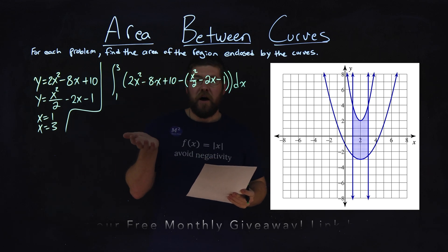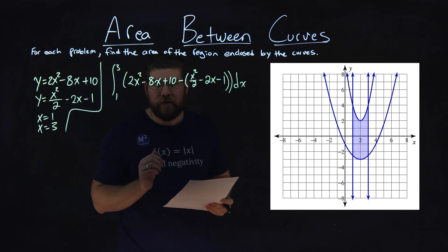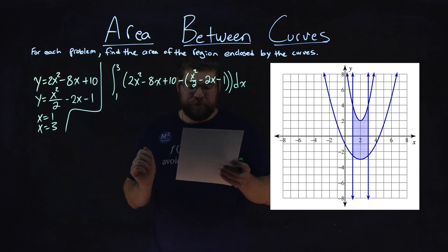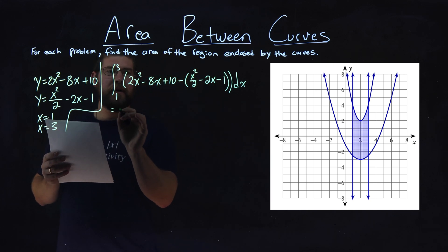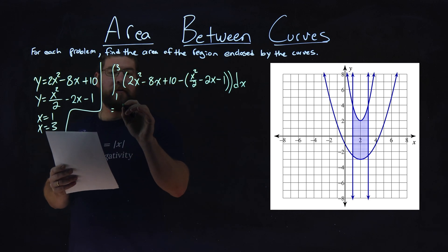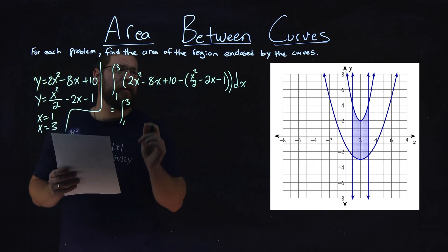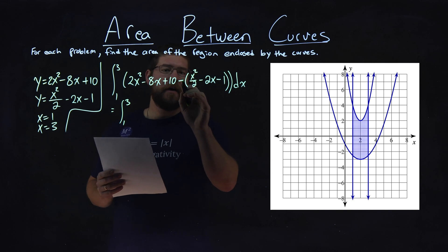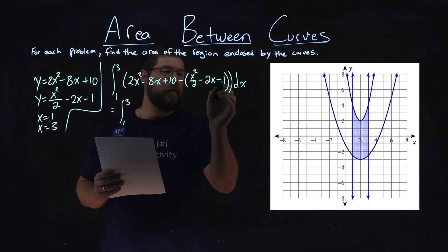And now that we have this set up, we just need to solve this integral here, and we'll get our answer. So the way I like to rewrite this is we'll simplify it first before we take the actual integral. So we're integrating from 1 to 3 here, and we'll combine like terms. Distribute this minus sign across to all parts here,